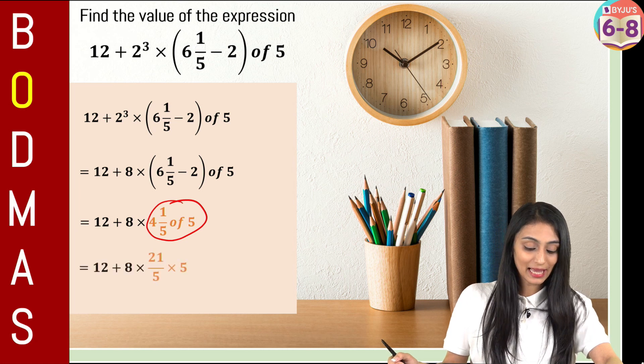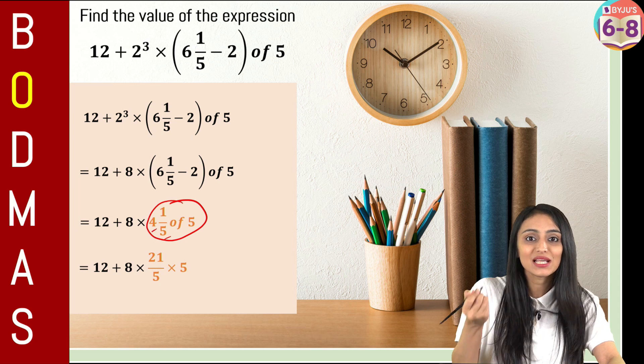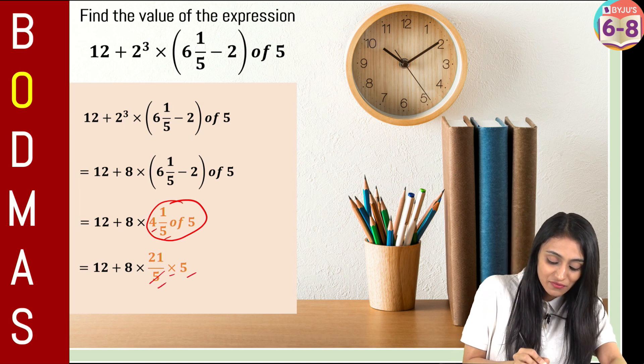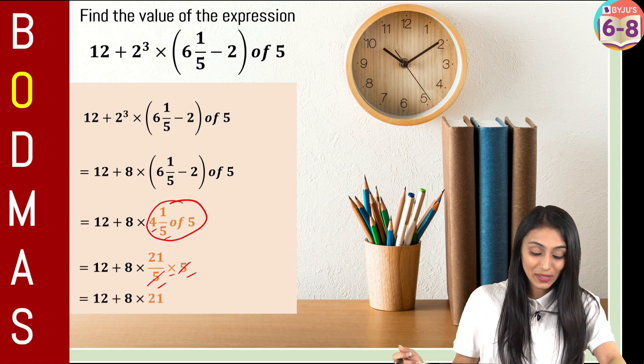Now off this changes to multiply. So we have 21 by 5 because 5 times 4 is 20 plus 1 is 21. 21 by 5 times 5. So this 5 and 5 will cancel out here. Now what we will do, we are left with 12 plus 8 times 21.